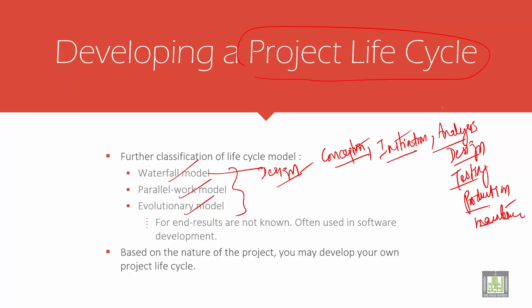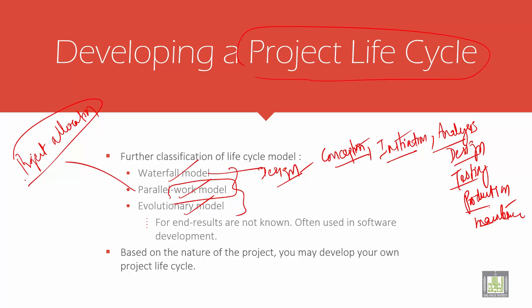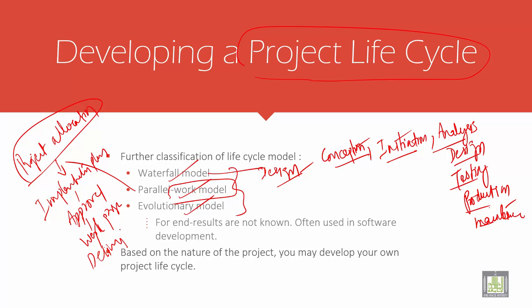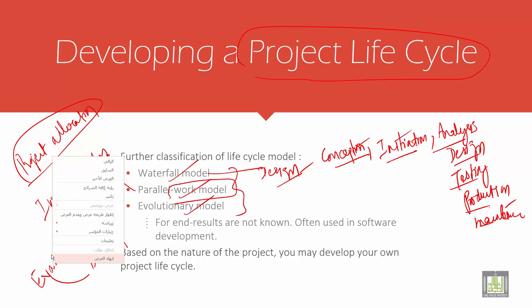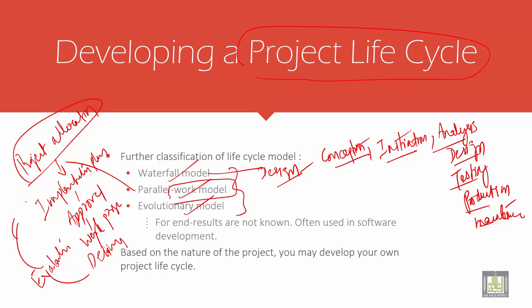The parallel work model is designed where work is done parallelly. For example, scanning, project allocation, implementation plan, approval, work progress, delivery, and evaluation are all done in a parallel and systematic manner.